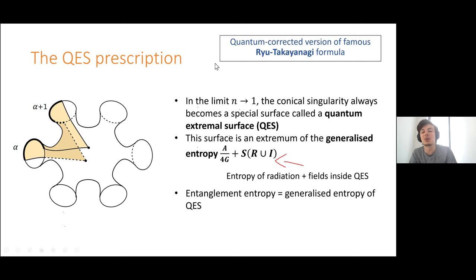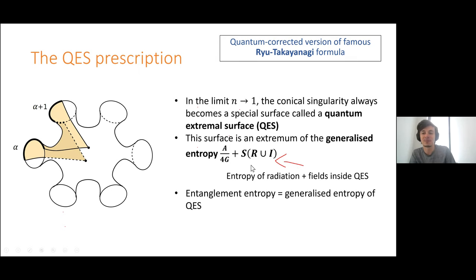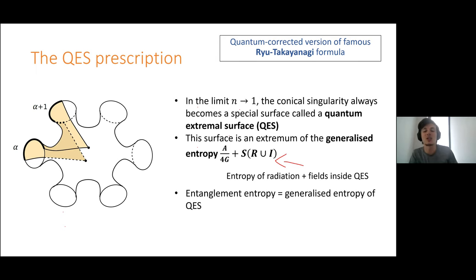The final answer for the entanglement entropy of your radiation is this area plus bulk entropy for that special surface — similar to the Ryu-Takayanagi formula Tommy was talking about in his introductory talk, where you minimize the area of a surface anchored on some boundary. This is just the quantum corrected version of exactly that formula: we've replaced area over 4G with area over 4G plus this bulk entanglement entropy. The whole argument about taking quotients was originally developed to derive the Ryu-Takayanagi formula, and the tricks were then applied to these more general quantum concepts.